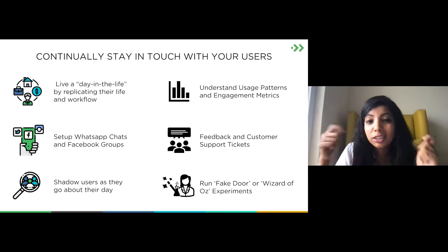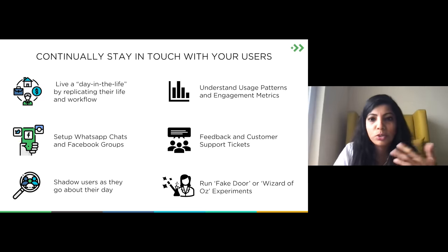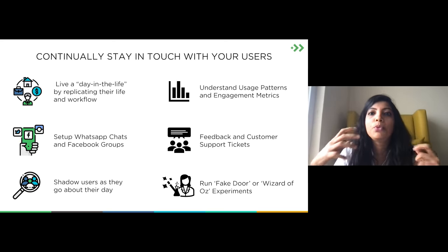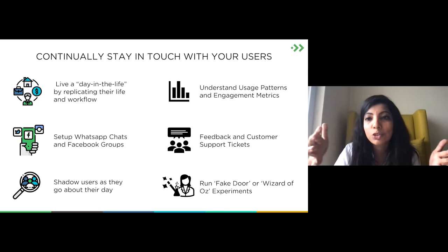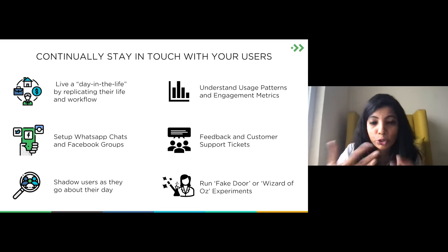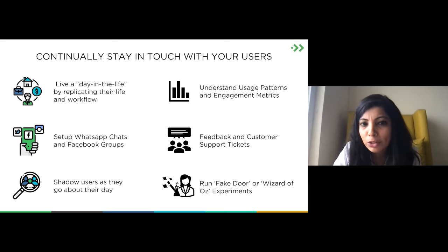You have to continually stay in touch with your users — the goal is to create a robust, holistic view. Remember: people are not static. Their behaviors, roles, responsibilities, needs, and pain points change. Your ideal user is a living, breathing definition that you'll come back to and modify often. You'll collect two kinds of data: qualitative — living a day in the life by replicating their workflow, setting up WhatsApp chats or Facebook groups, or shadowing users as they go about their day — and quantitative, using engagement metrics and feedback to inform your personas.